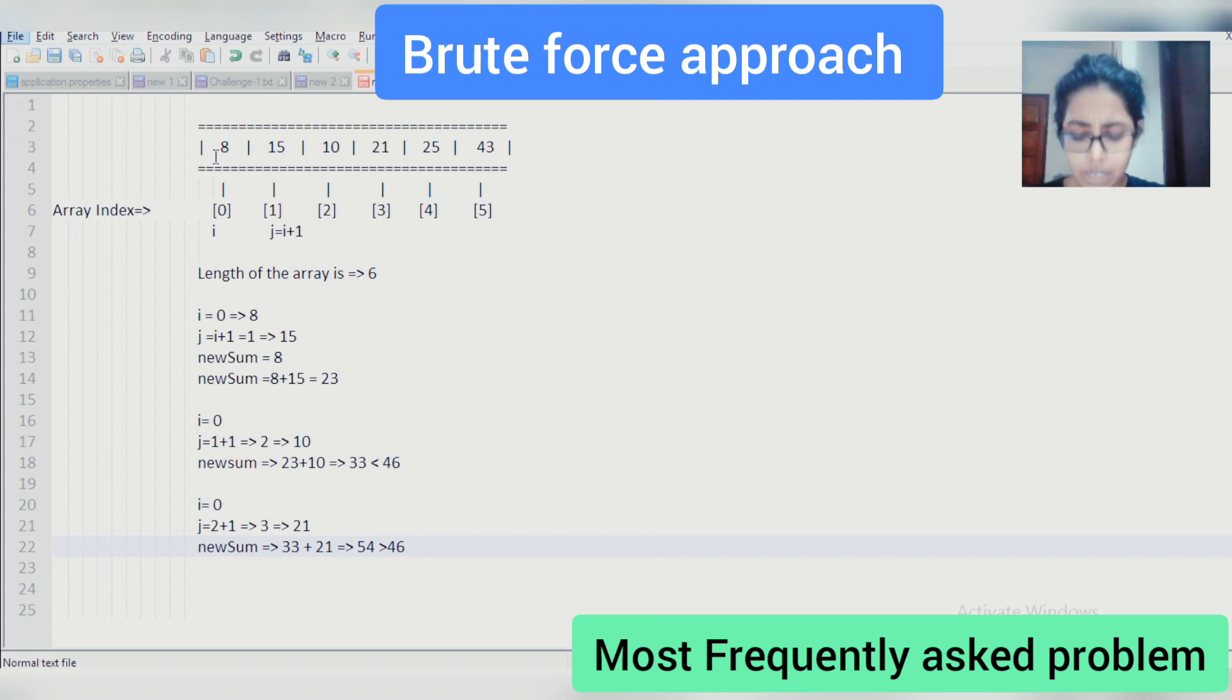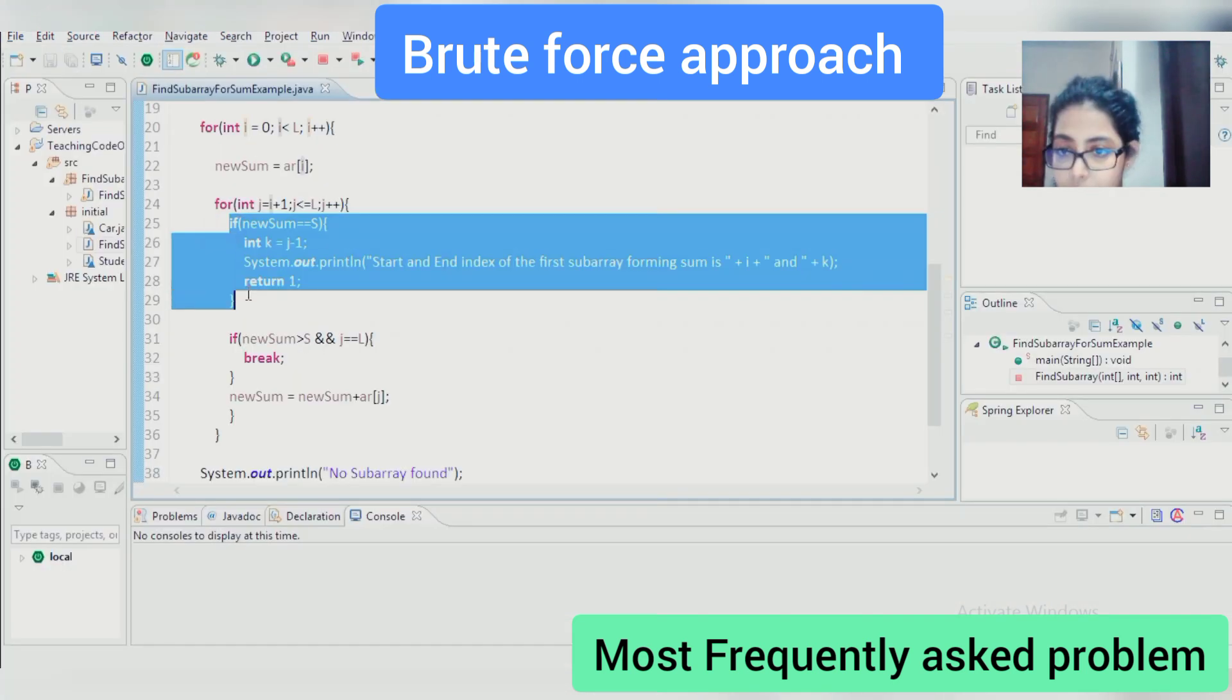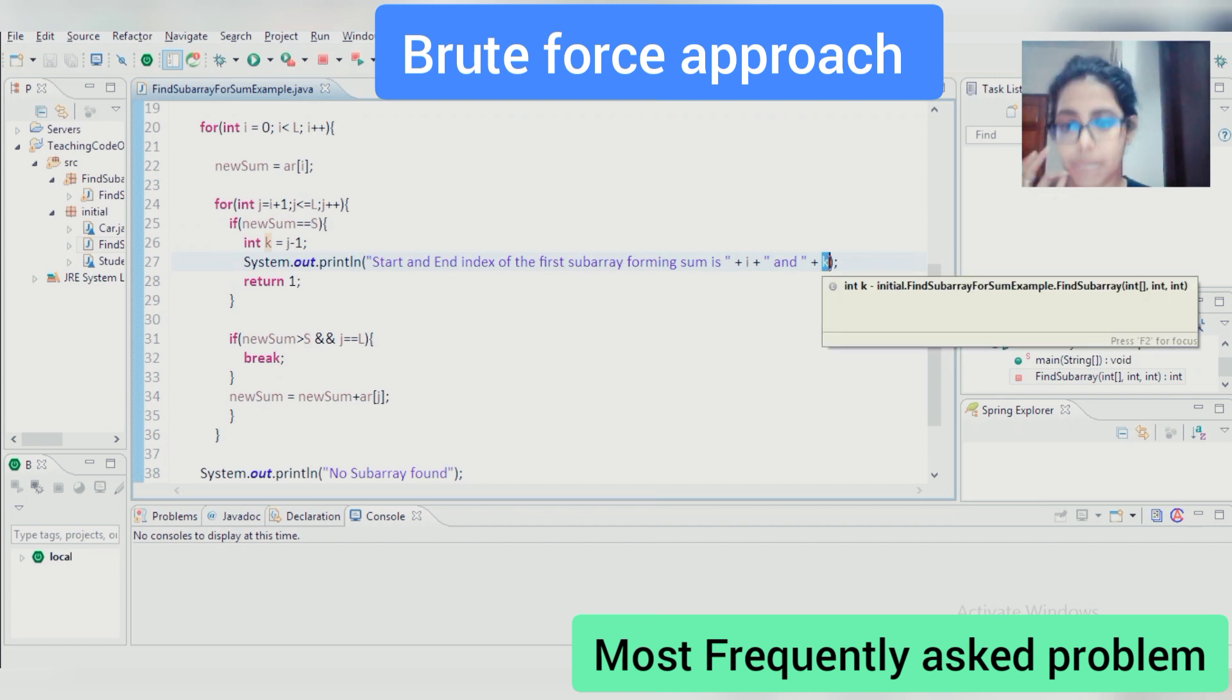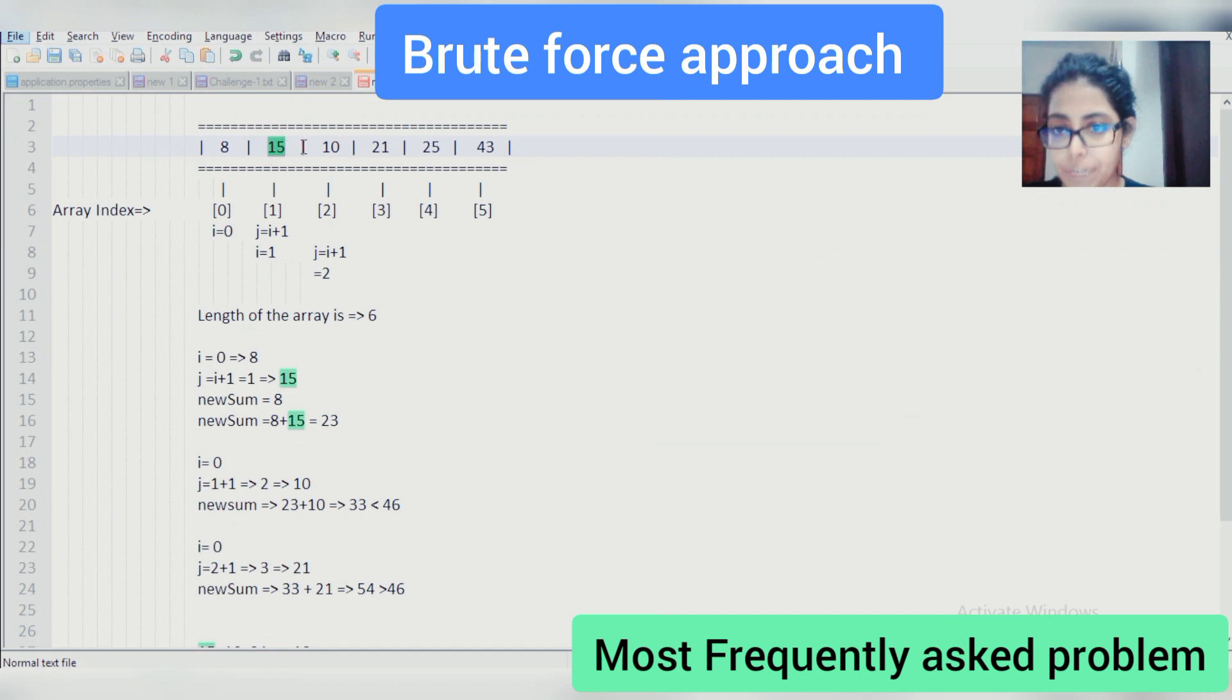So we won't go forward to adding anything else to 54 because it is already greater than 46. In the similar way, now we will be going from starting from 15 towards the end of the array. And if we add 15 plus 10 plus 21, we will be getting the required value, which is 46. In the similar way that I have just explained you for 8. The part of code where we are checking, if our new sum value is equal to s, then we are printing the starting and the ending index of that subarray, which is in our case 15 and 21.